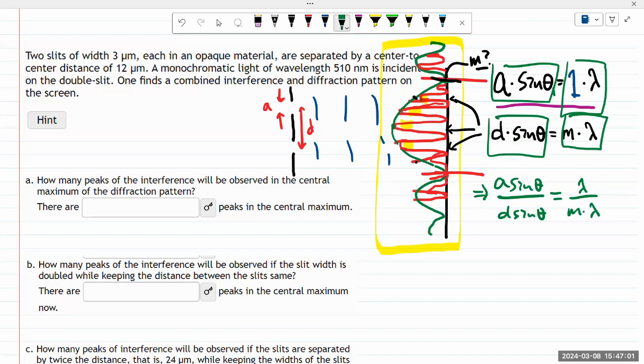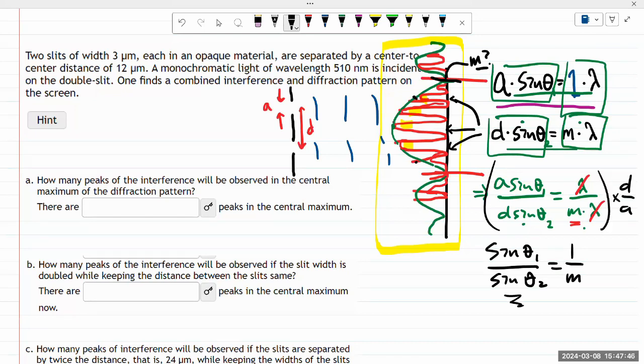I'll label these equations one and two. I can do that because I'm dividing both sides by the same number, just expressing it in two different ways. a sine theta divided by d sine theta equals lambda divided by m lambda. When you do it that way, some things cancel out - lambdas cancel. So sine theta one over sine theta two equals one over m times d over a.